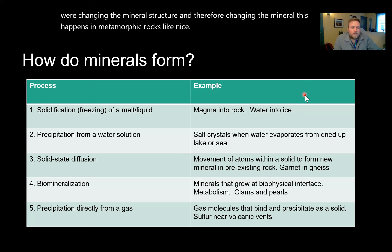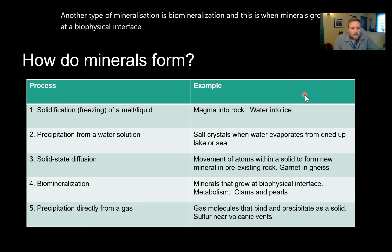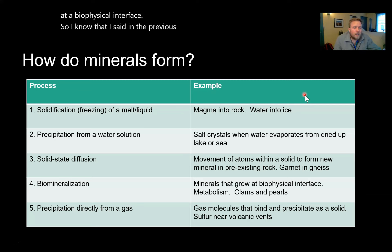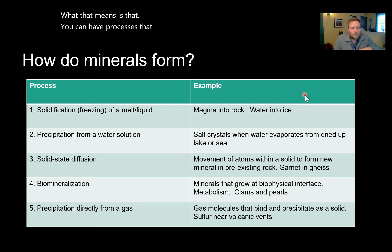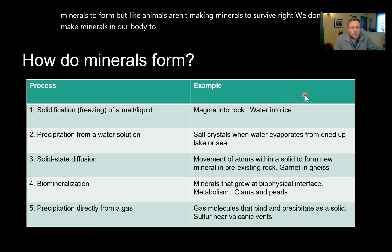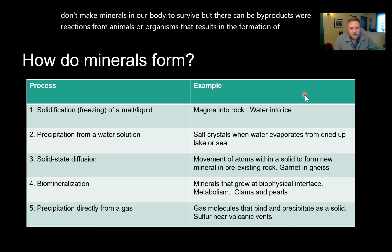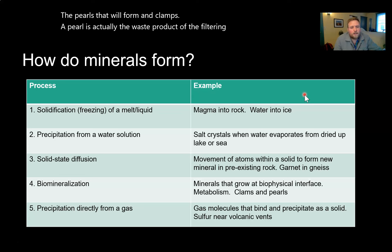Another type is bio-mineralization, where minerals grow at a biophysical interface. I said earlier that minerals are abiologic — what that means is that while biologic processes can catalyze mineral formation, animals aren't making minerals to survive. But byproducts or reactions from organisms can result in mineral formation. One example is pearls that form in clams: the pearl is actually the waste product of the filtering of seawater for nutrients that clams perform.